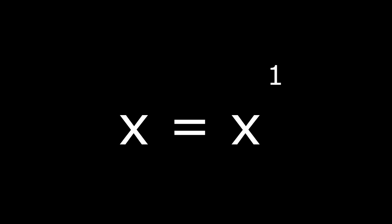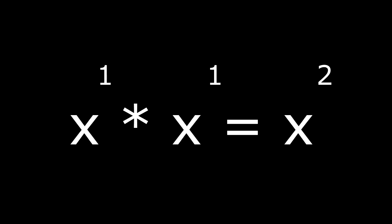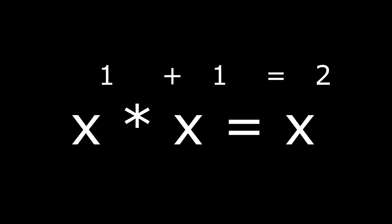The X standalone is shorthand for X to the first power. And when we multiply it by another X to the first power, we get X squared. In other words, by multiplying, we're actually adding powers. Similarly, by dividing like variables, we subtract powers.